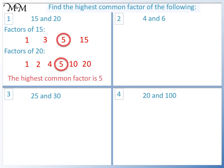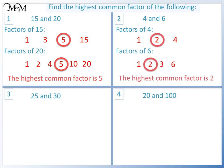Question 2: The factors of 4 are 1 and 4 and 2. The factors of 6 are 1 times 6 and 2 times 3. The highest common factor is 2.